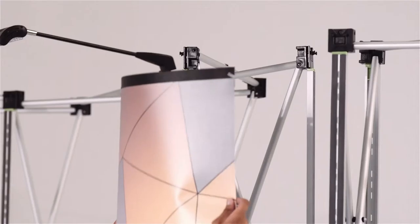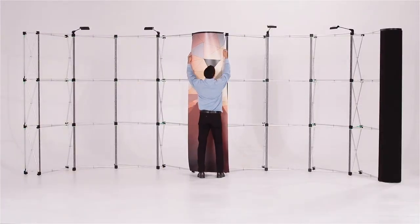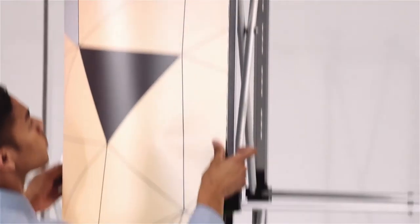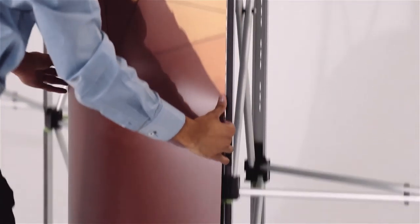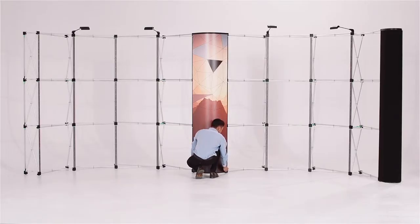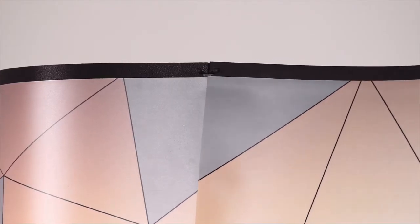Next, attach the panel that connects the two frames. Placement of the frames may need to be adjusted for proper distance so that this center panel lines up properly. Now, attach the rest of the panels.